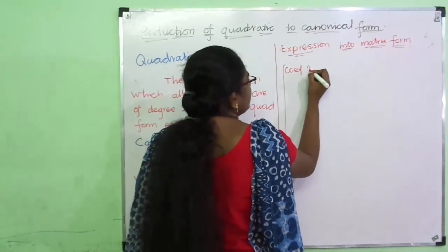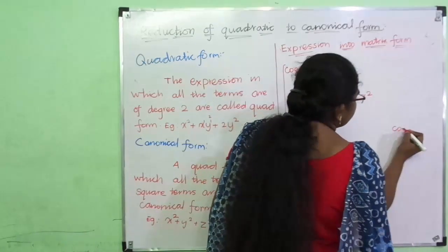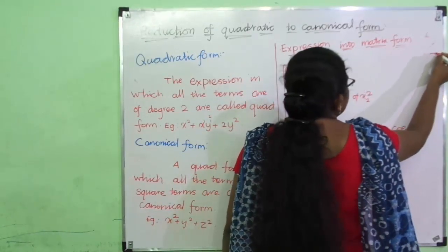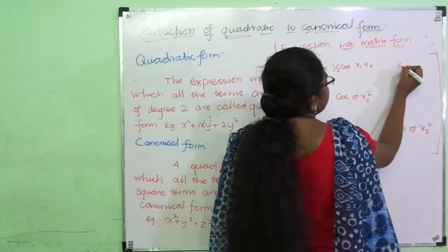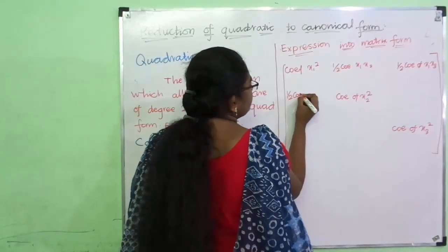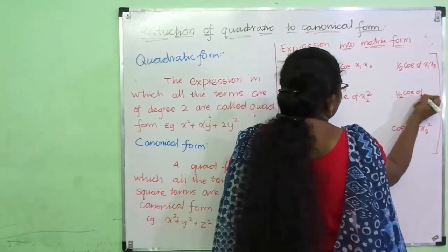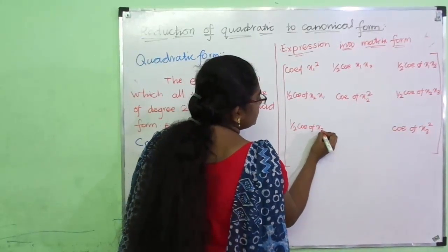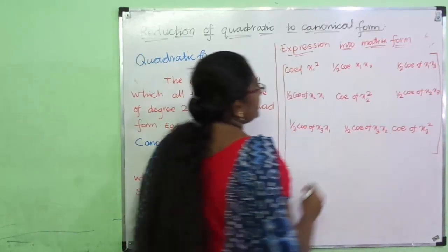All the diagonal entries will be the coefficients of the square terms: coefficient of x1 squared, coefficient of x2 squared, and coefficient of x3 squared. The remaining off-diagonal terms will be half the coefficient of x1x2, half the coefficient of x1x3, half the coefficient of x2x1, half the coefficient of x2x3, half the coefficient of x3x1, and half the coefficient of x3x2.